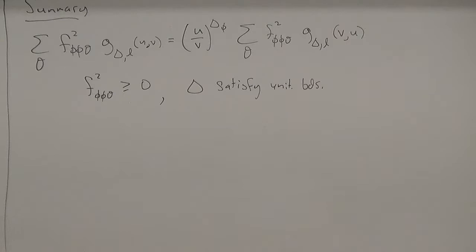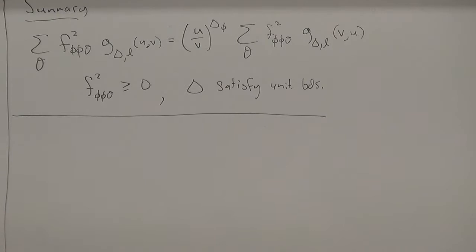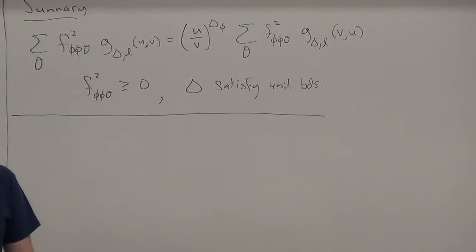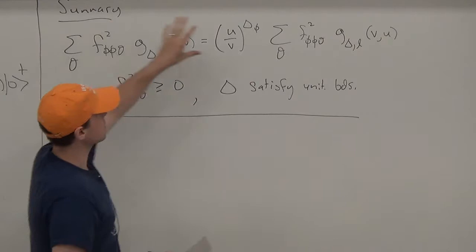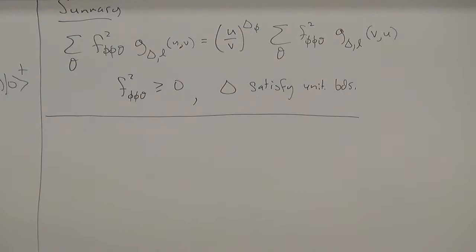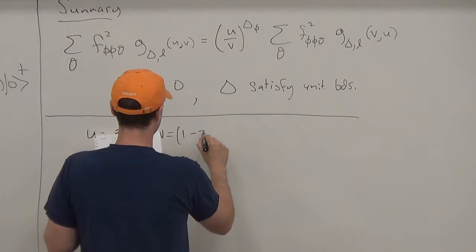We're going to take two approaches to studying this equation. First, I want to make a couple more comments about it. Several people have asked me about the regime of convergence of the OPE, and understanding that is important for understanding this equation. It's important that there exists a regime of conformal cross-ratios where both of these sums converge, so that you can impose their equality without worrying that something is ill-defined. It turns out that the regime of convergence of the OPE is actually pretty enormous.